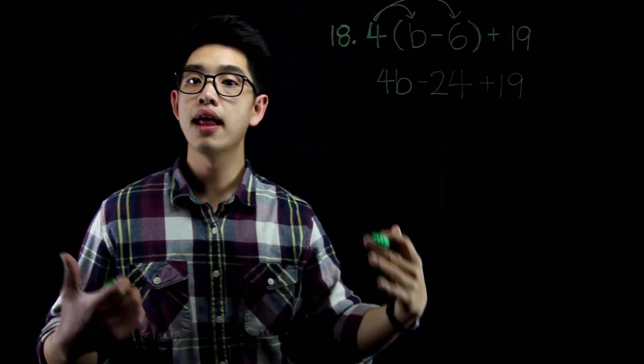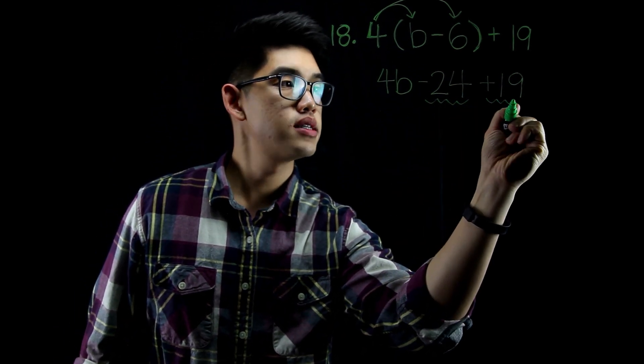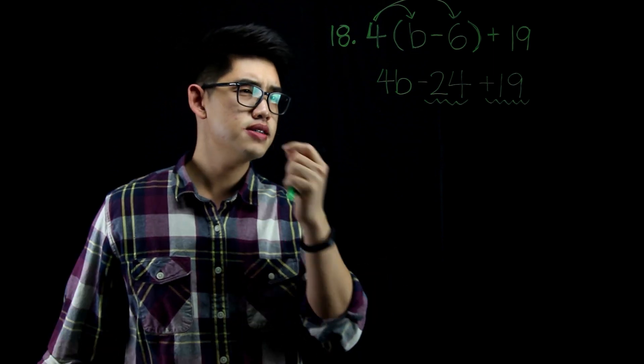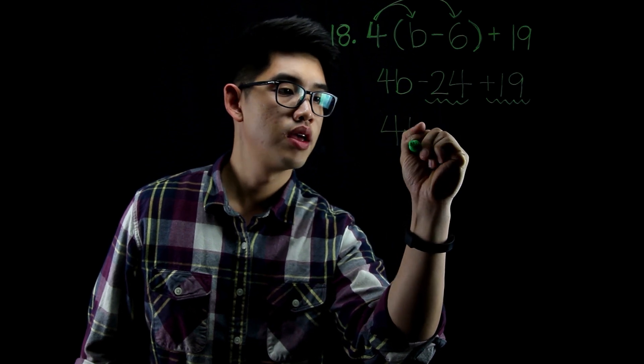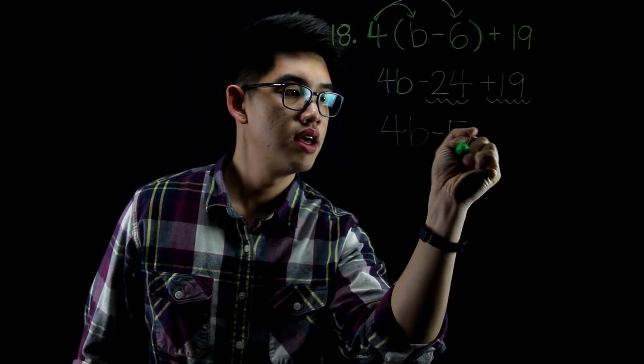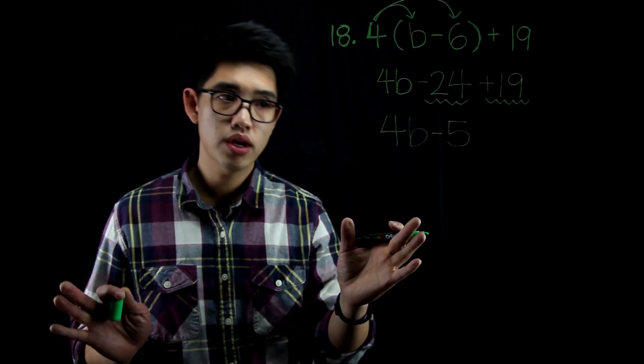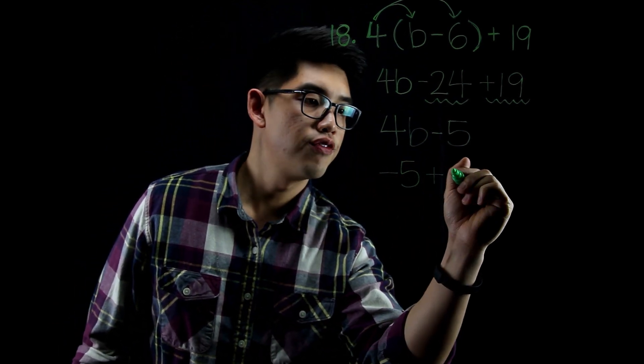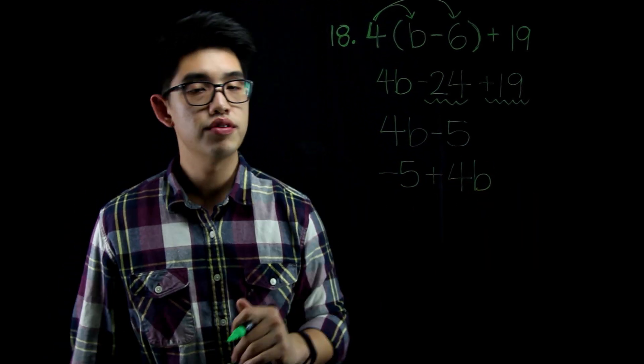Drop down to 19. Now I can combine like terms. I see that there's negative 24 here and there's positive 19 here. Negative 24 plus 19, I think that's going to be negative 5. So 4b minus 5 is your answer. If you wrote it a different way, that's okay. If you wrote negative 5 plus 4b, that answer is okay too because of the commutative property.